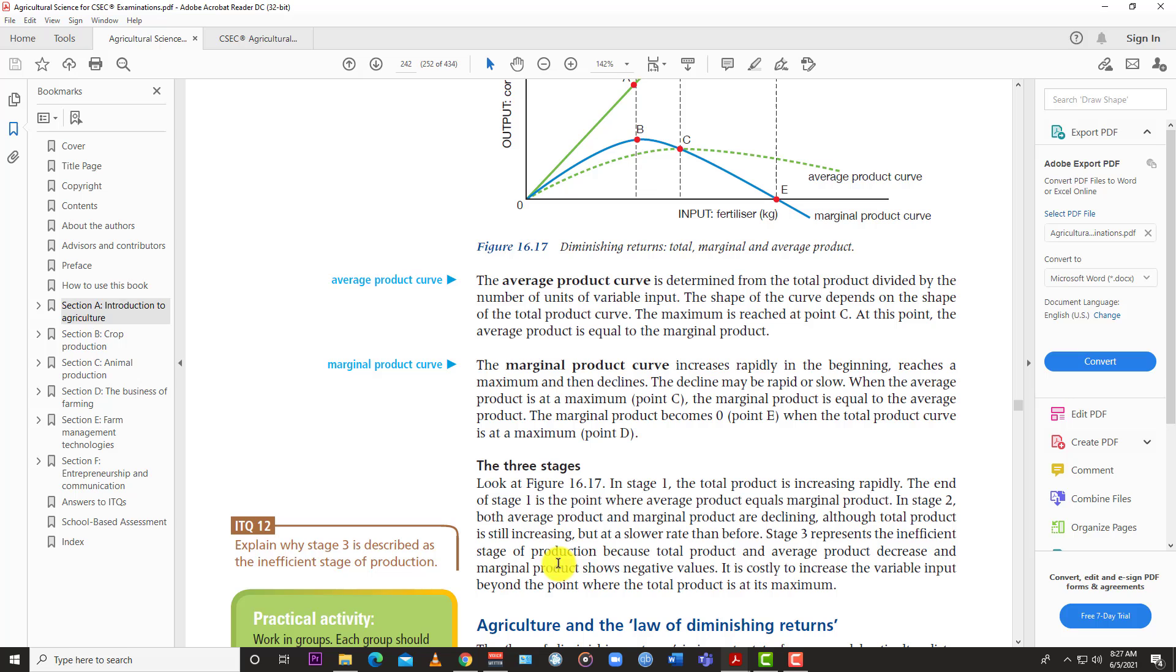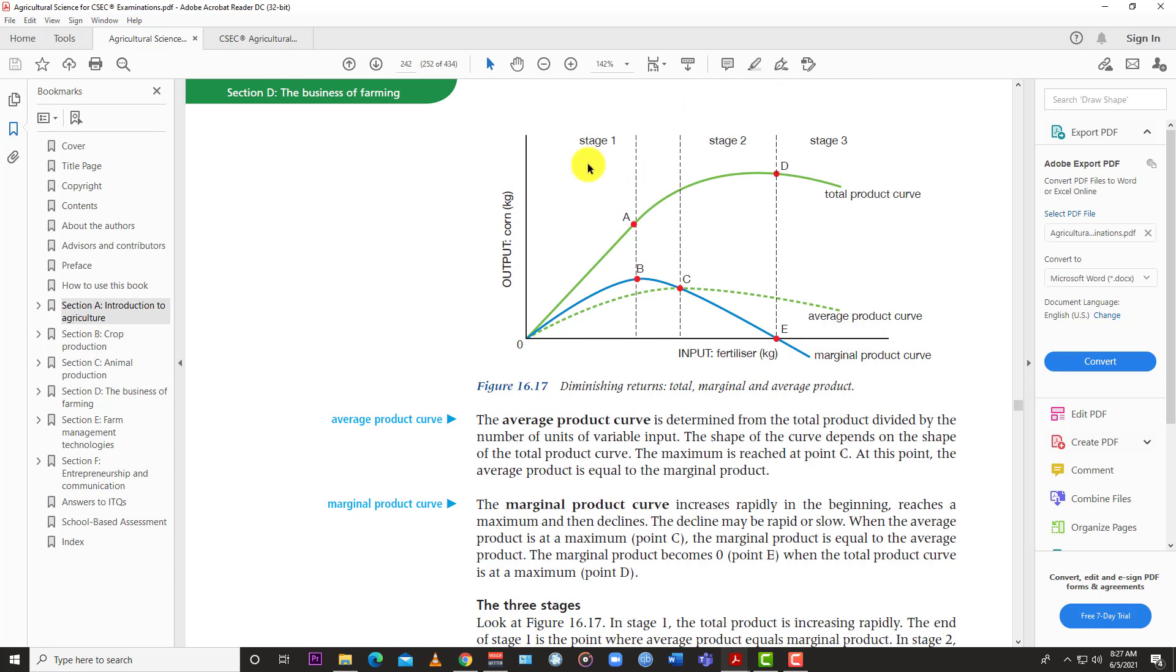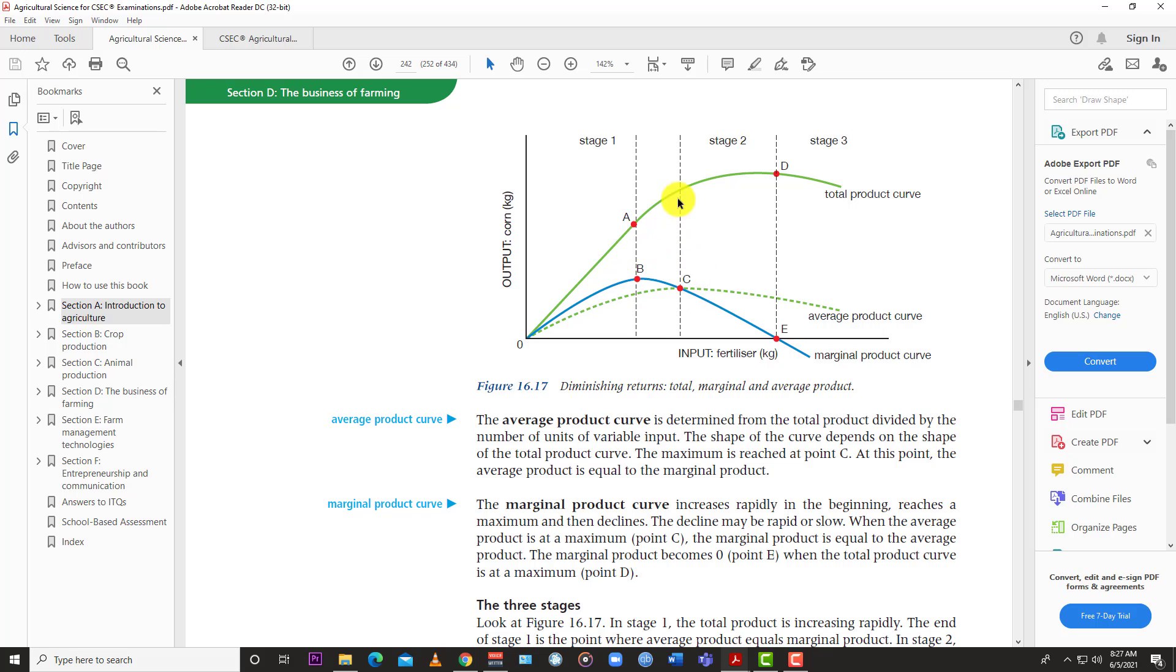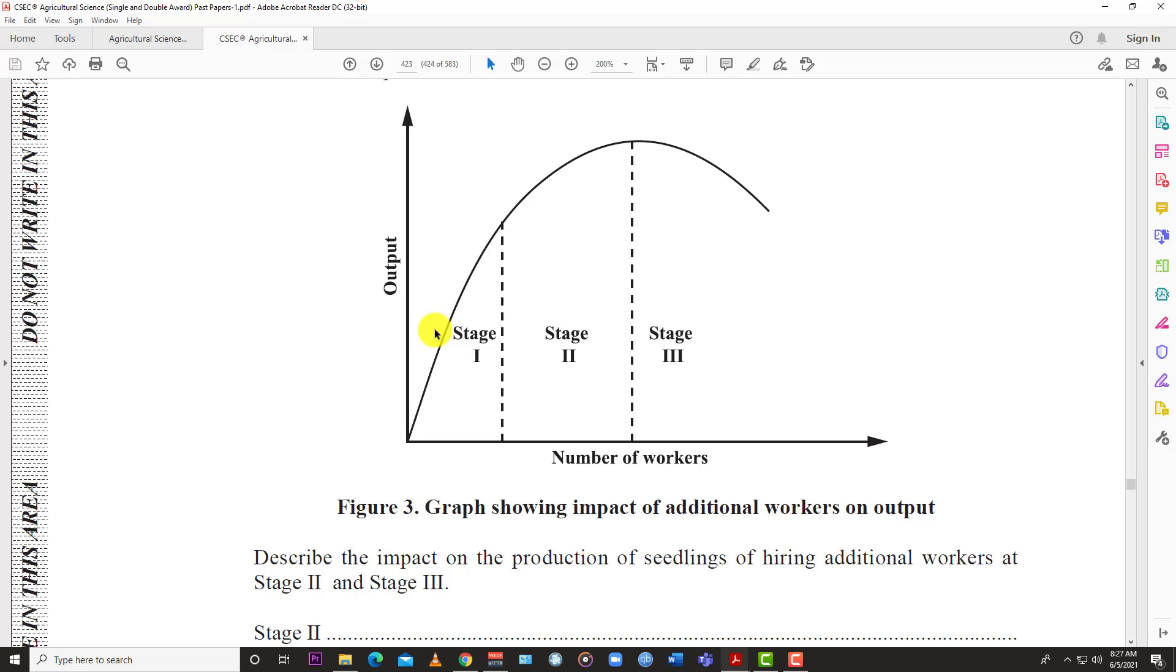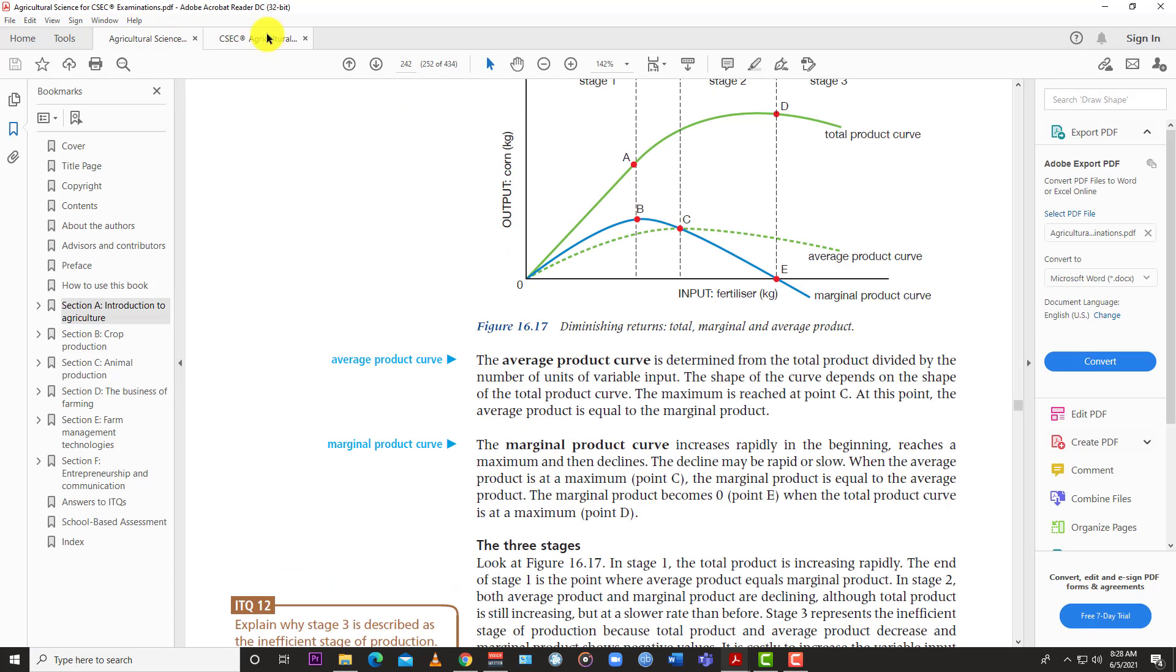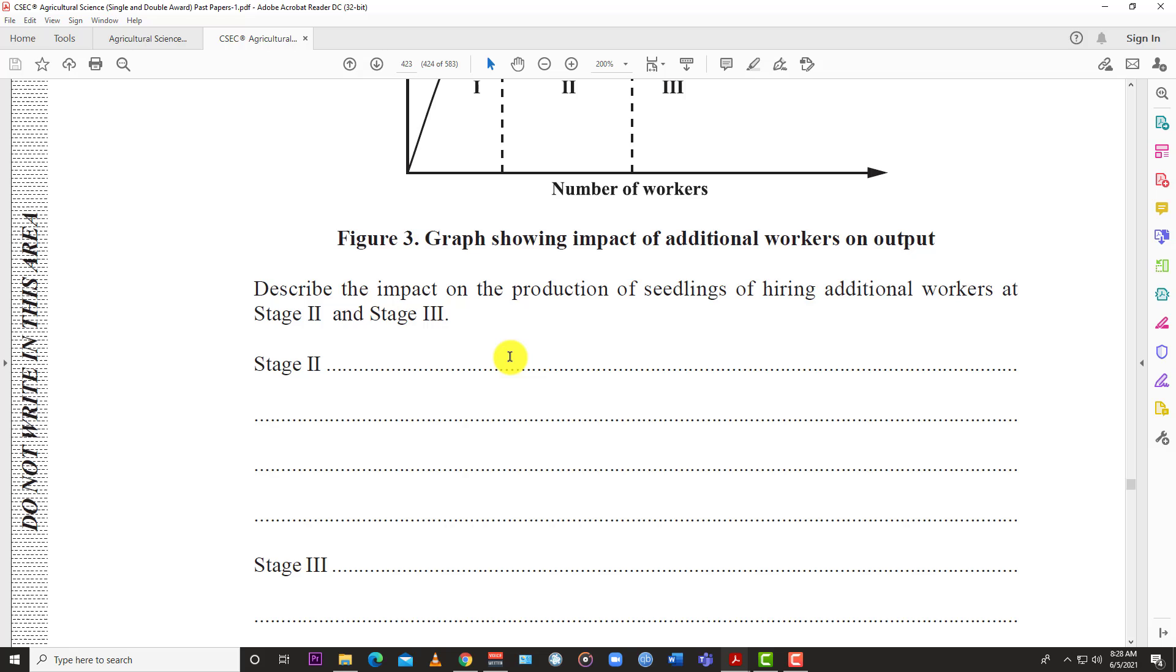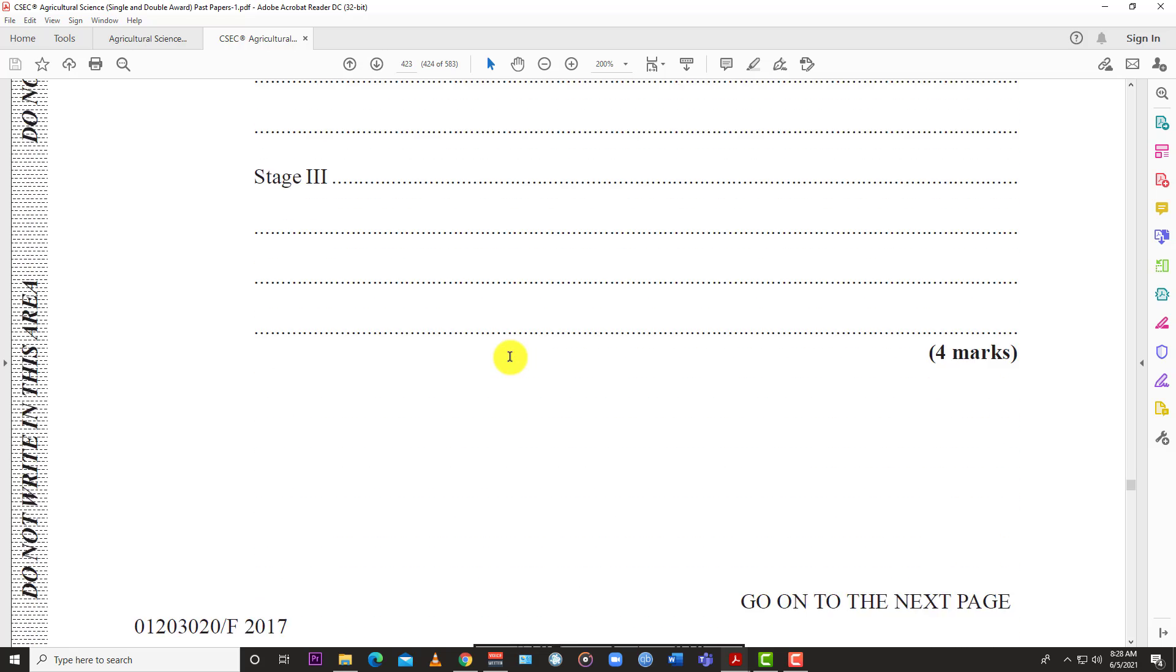Stage three is an inefficient stage of production because total product and average product decrease and marginal product shows negative values. It is costly to increase the variable input beyond this point where the total product is at its maximum. This diagram is representing the total product. As you can see, the total product is increasing here, increasing here but at a diminished rate, and then it starts going down. Diminishing returns kicks in. It peaks at stage two, starts going down by stage three. That's four marks right there.